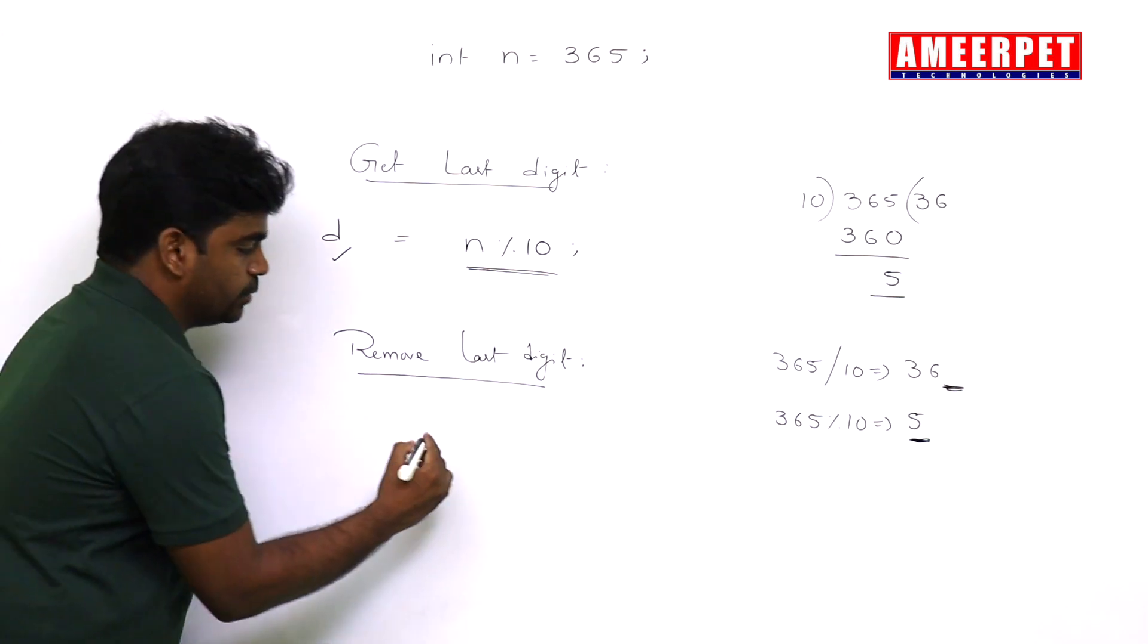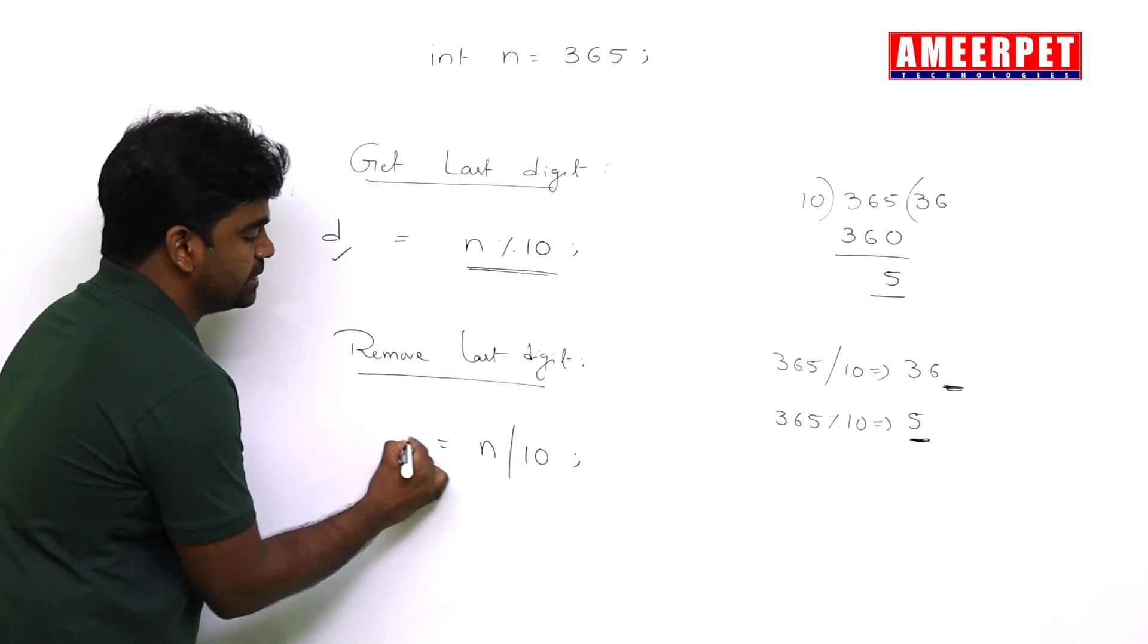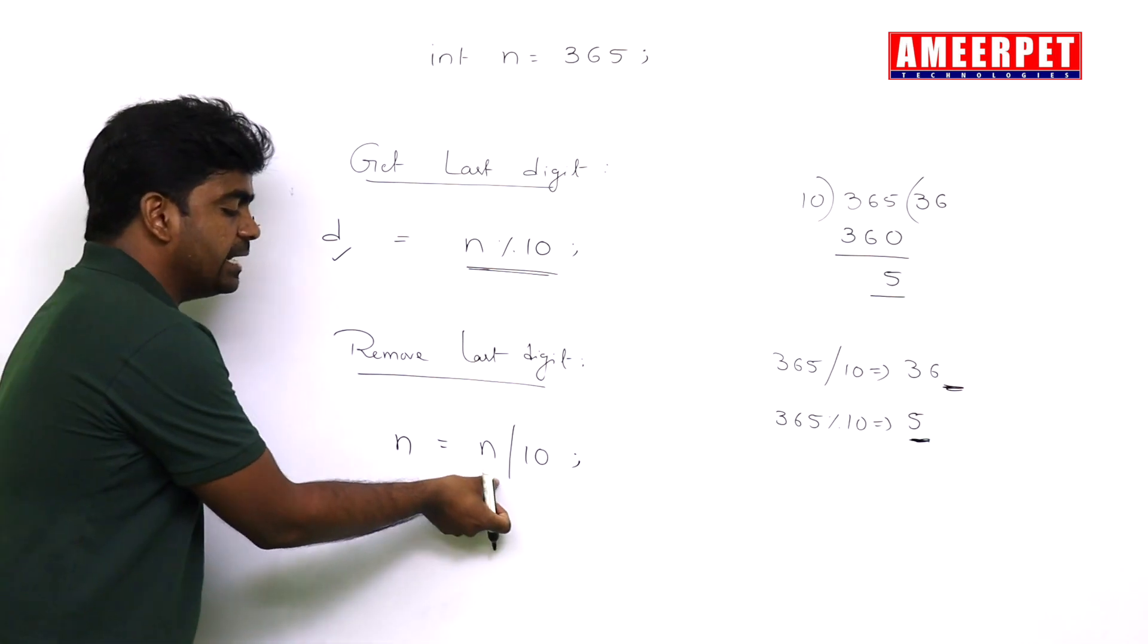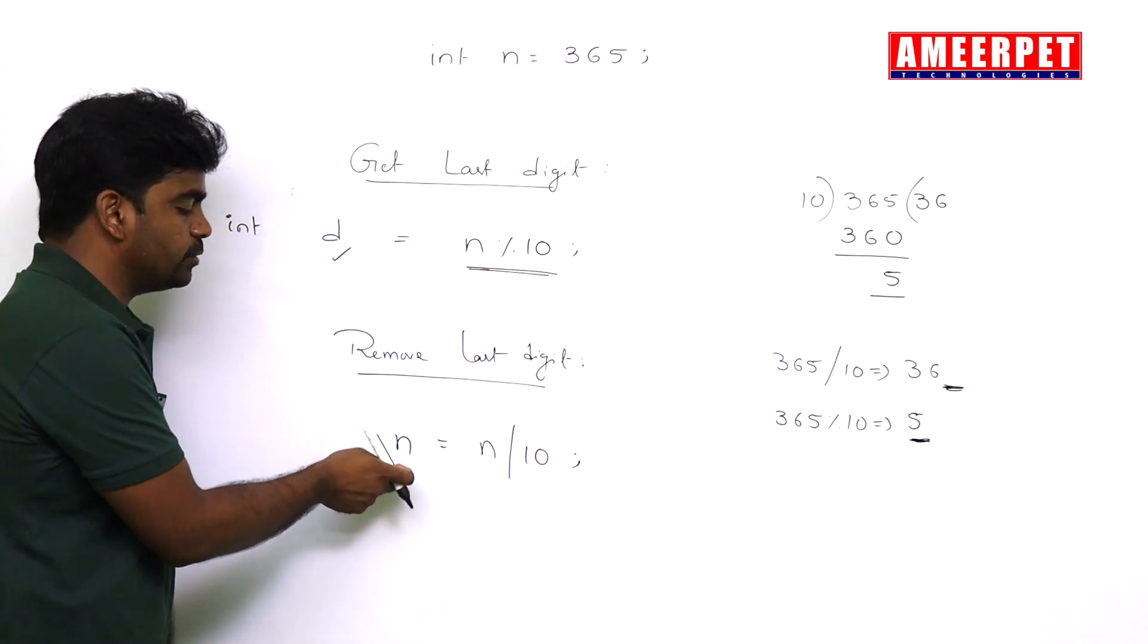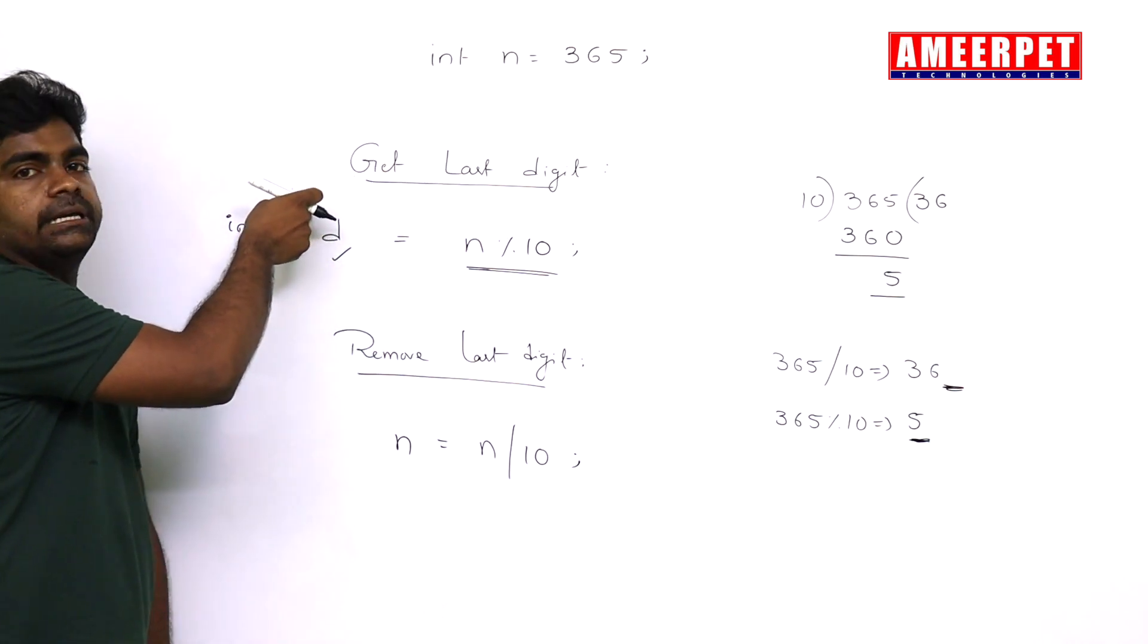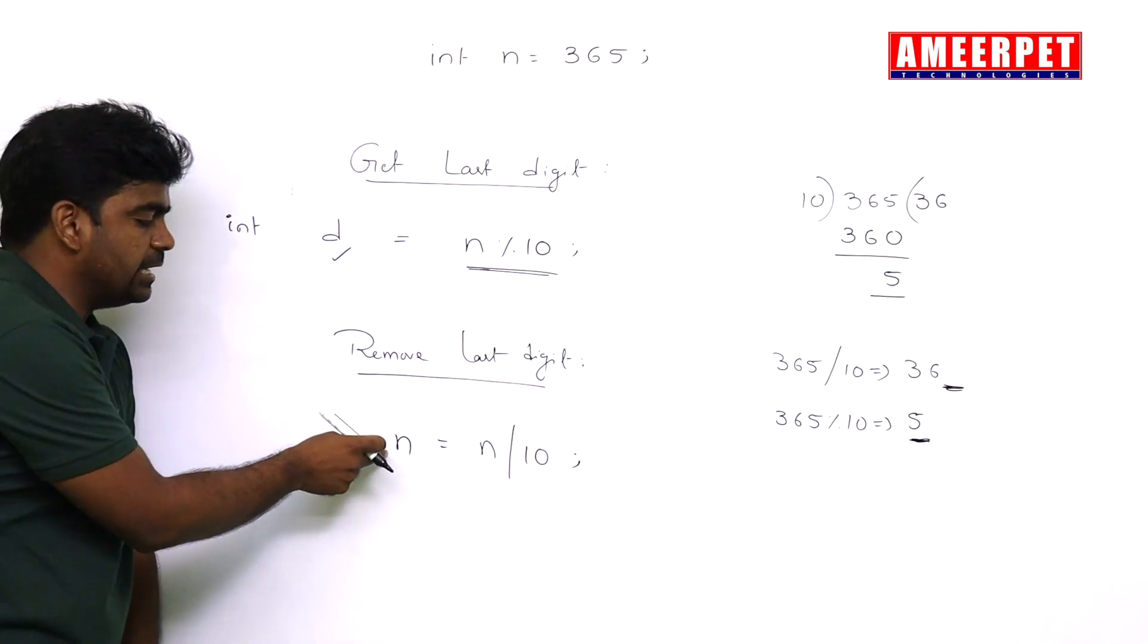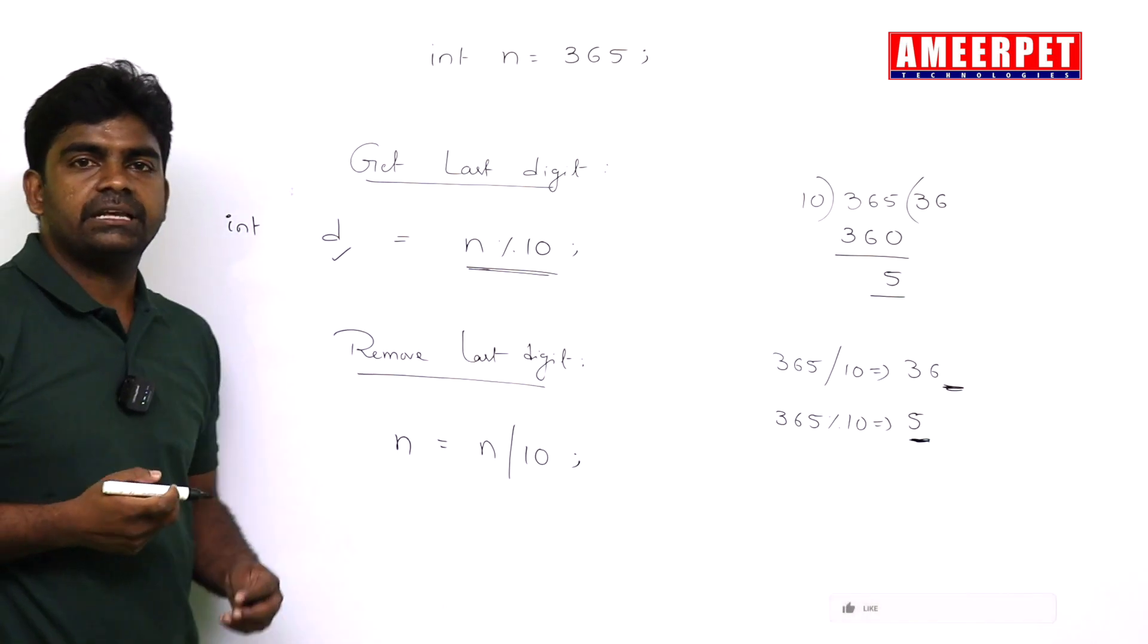And any number you just divide with 10, store into the same variable n only, because we are going to remove. So n value is 365, n by 10 means it will remove that 5, 36 will store into that same n. But don't store n mod 10 operation value into n, because you are getting the digit, you are not removing, you are not changing this n. But here you are changing this n.